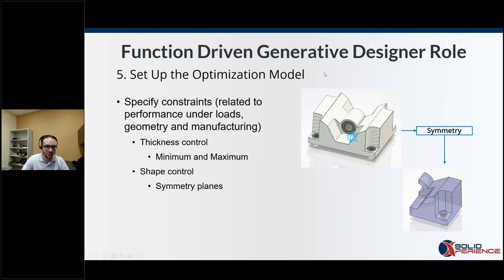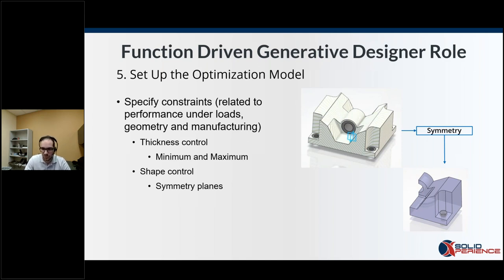Next, we specify constraints related to performance under loads, geometry, and manufacturing. In this particular example, since we want to 3D print it, we'll have a minimum member thickness — we don't want a member of 0.5 millimeters because while 3D printing it will cave in on itself. Similarly for machining, a member too thin will break off. Depending on the type of machines you have, you can set a minimum and maximum thickness. For this part, we want the best optimized model with the most weight removed, so we won't set a maximum thickness.